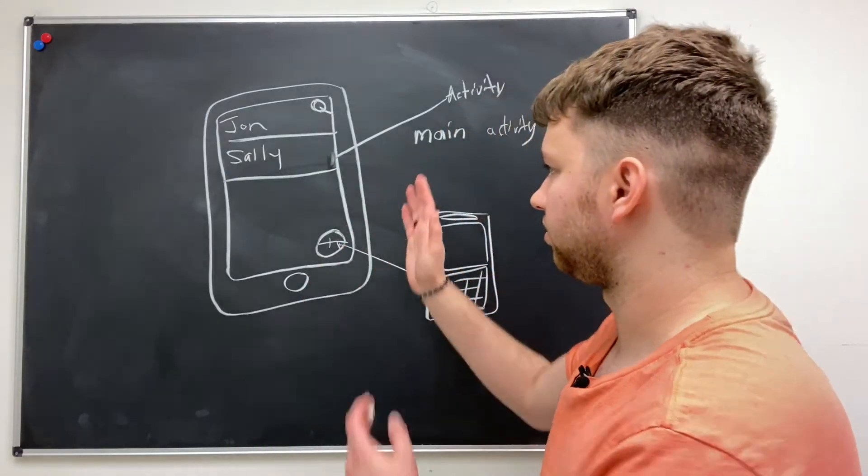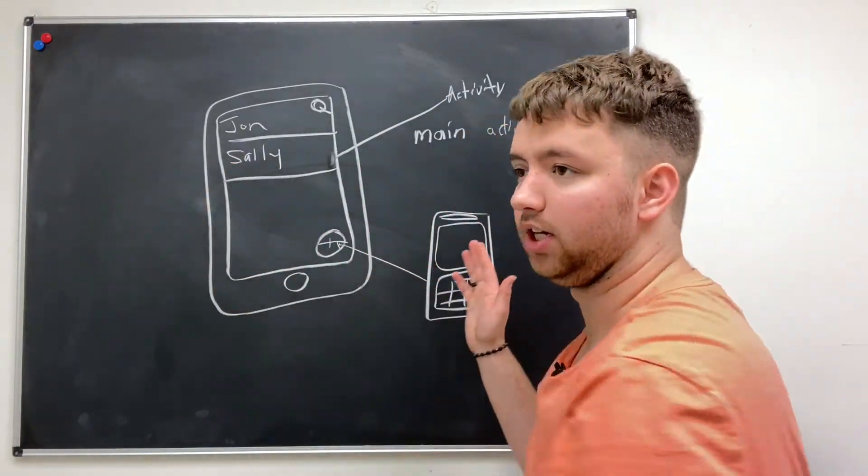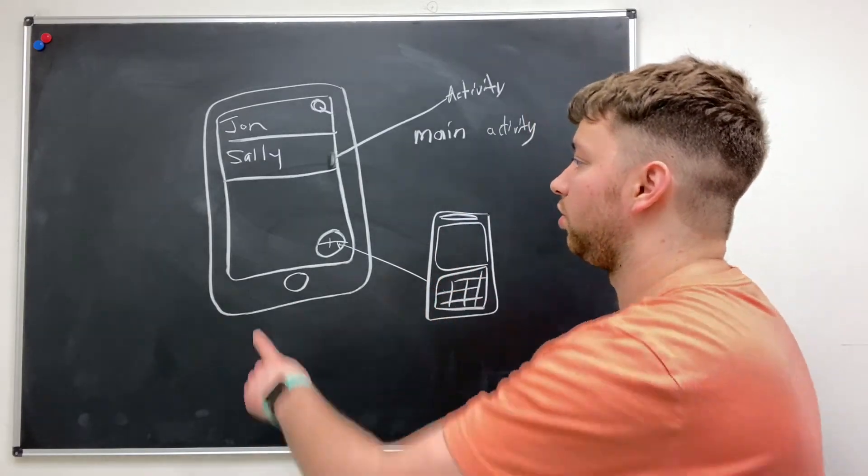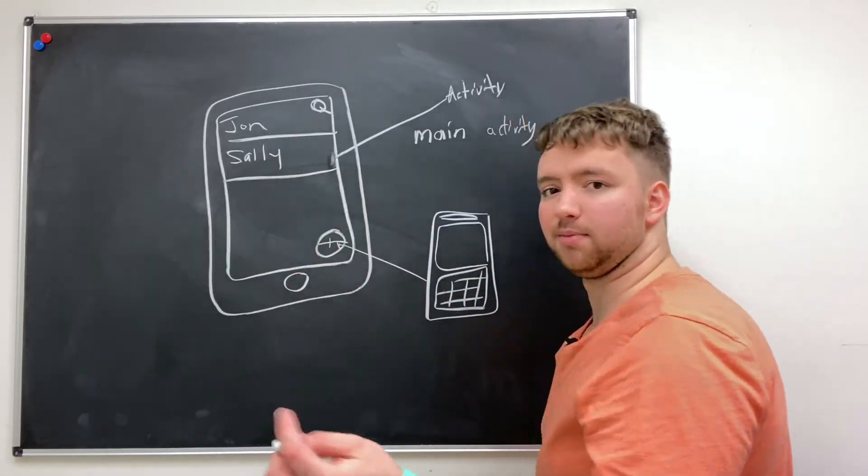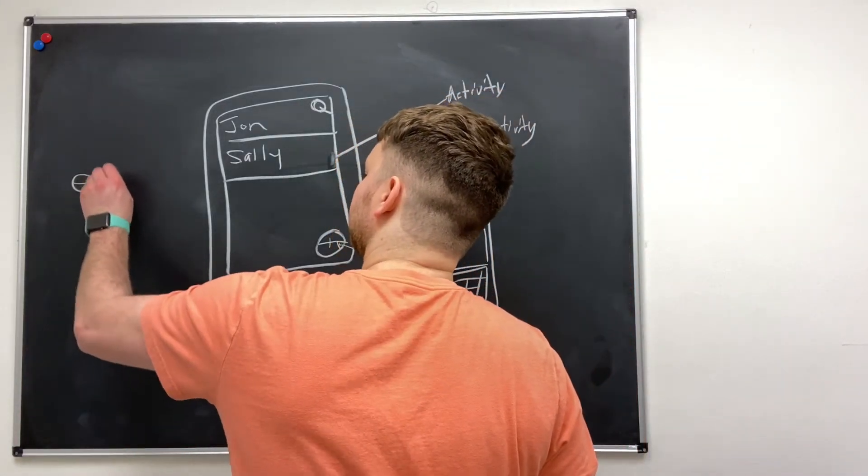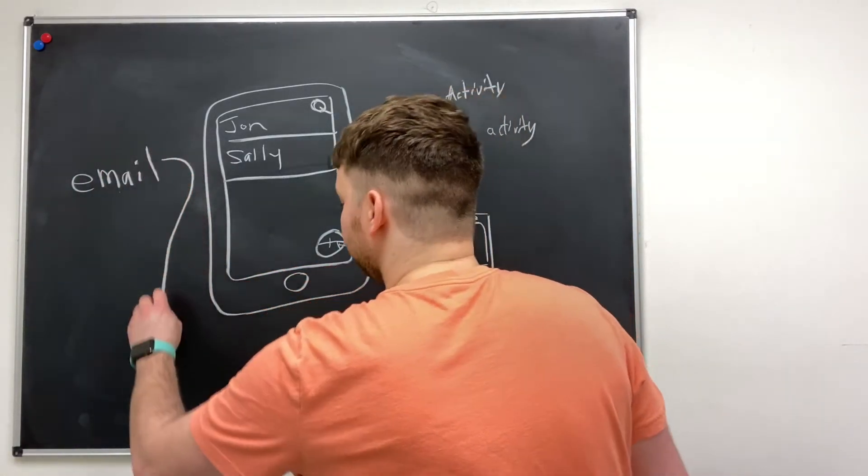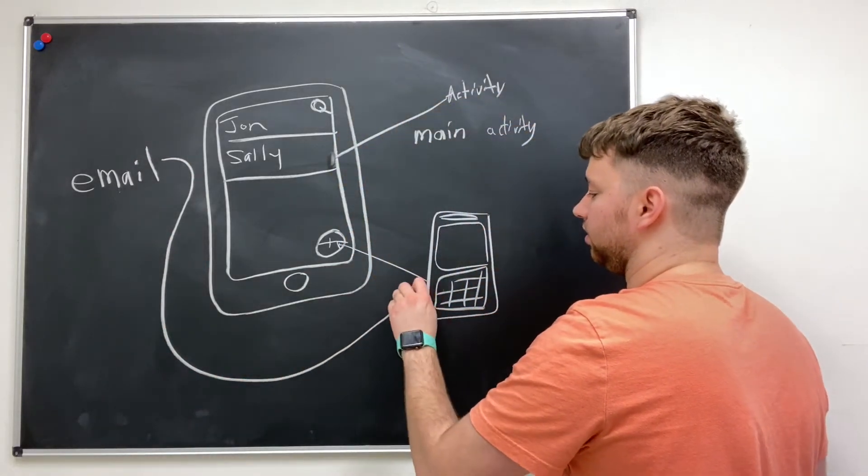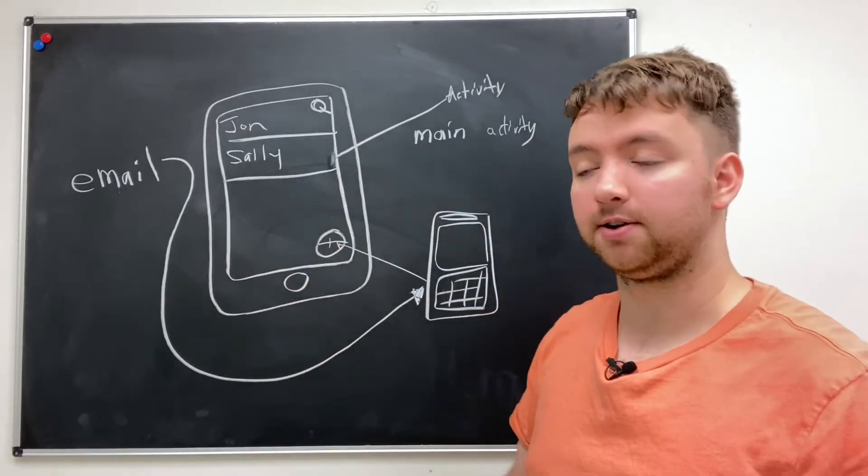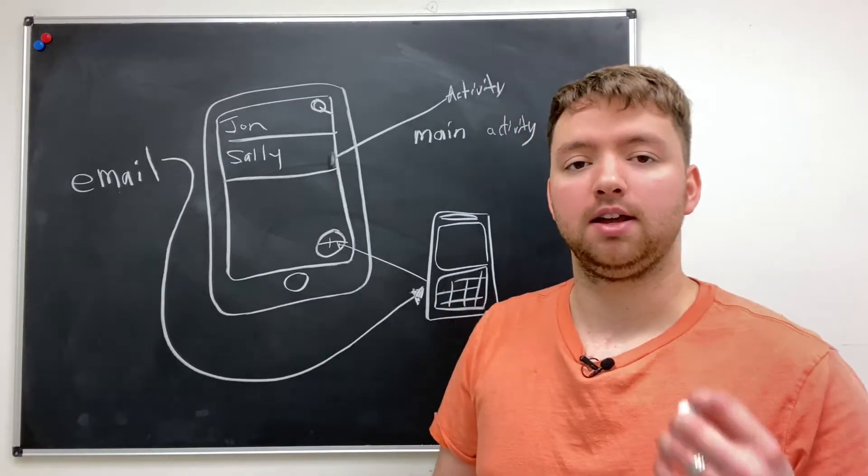Because oftentimes since these are so kind of like their own entities, we have one activity here, we have one activity here, we can send people directly to a specific activity. So you don't always have to go through this home page. So for an example, let's say we have a website and we have an email button, someone clicks that email, it opens your email app and it immediately goes to the compose activity and it just skips the home page all together.